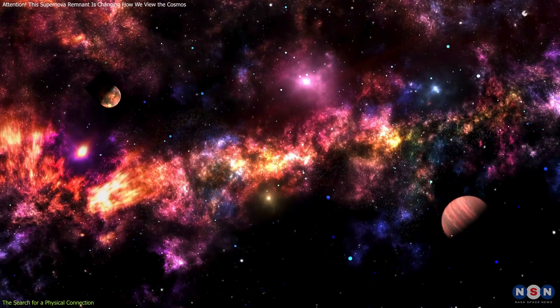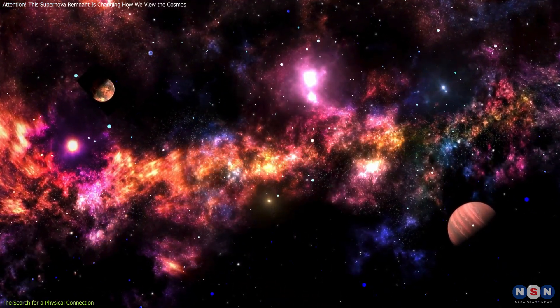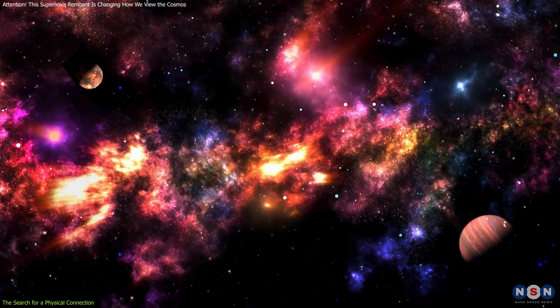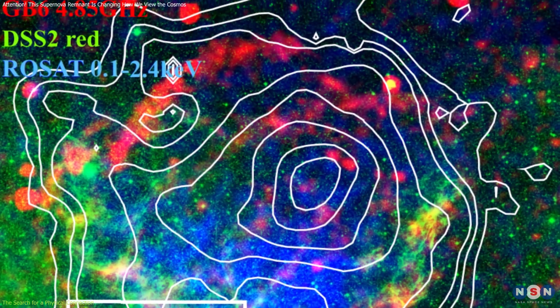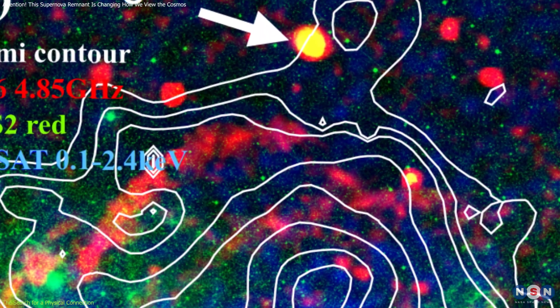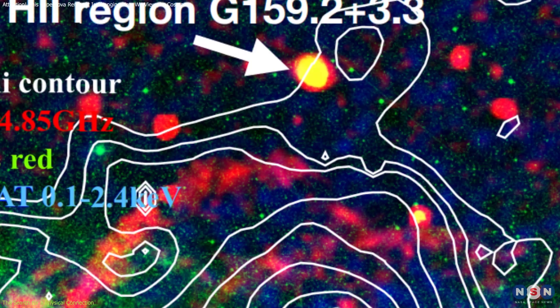Establishing physical connections between celestial objects requires precise measurements of distance, velocity, and composition. In this case, the measurements showed that while Hb9 and G159 might be spatially close, they're not actually connected.